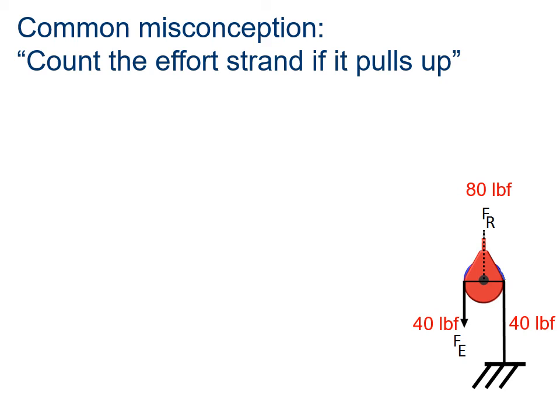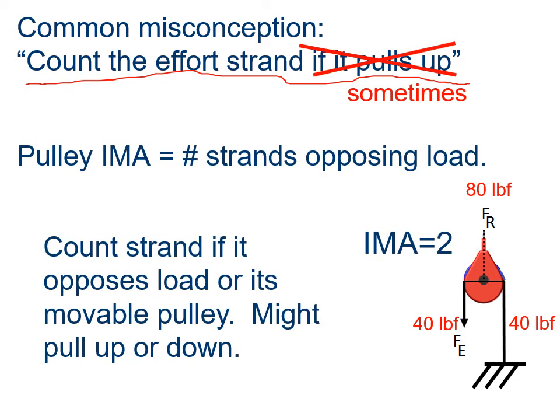There's a common misconception that you count the effort strand when you're pulling on it. The pulley IMA is the number of strands that's opposing the load. So we do count the strand if it opposes the load, or if it's a movable pulley, it could be pulling either up or it could be pulling down.